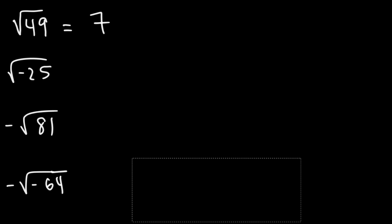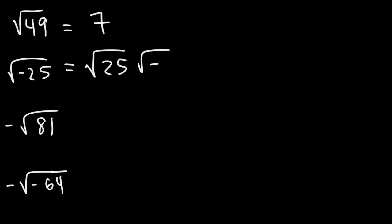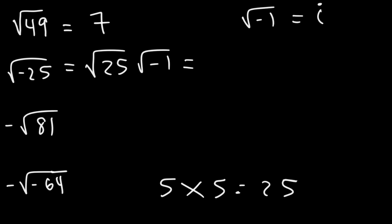What about the square root of negative 25? Well, this won't give you a real number — it will give you an imaginary number. What you can do is break it up into 25 times negative 1. The square root of negative 1 is the imaginary number i. The square root of 25 is 5, because 5 times 5 is 25. And the square root of negative 1 is i, so this gives us the imaginary number 5i.